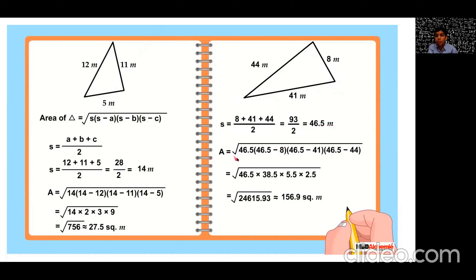Area equal to root of 46.5 into 46.5 minus 8 into 46.5 minus 41 into 46.5 minus 44 equal to square root of 46.5 into 38.5 into 5.5 into 2.5. If we calculate this, we will have the answer as square root of 24615.93 which is approximately 156.9 square meter.